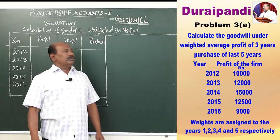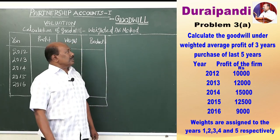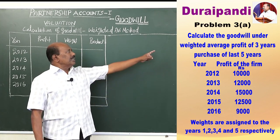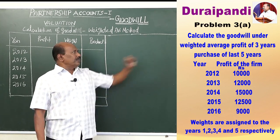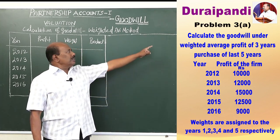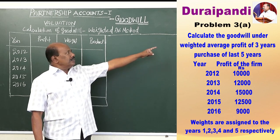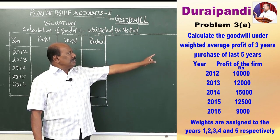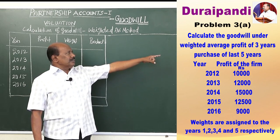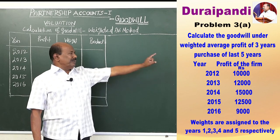Next, we are going to work out the calculation of goodwill under the weighted average profit method. Here we look at problem number 3: calculate the goodwill under the weighted average profit of 3 years purchase of the last 5 years profit.